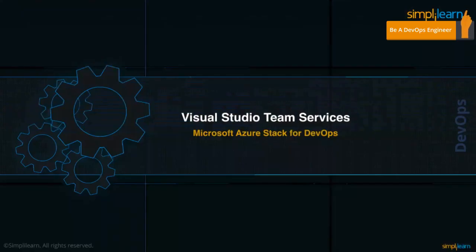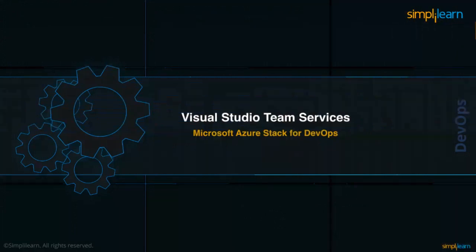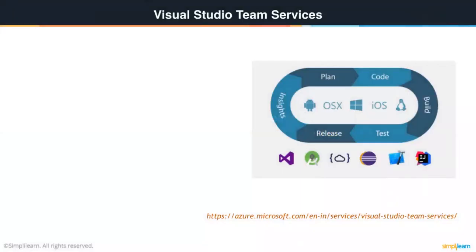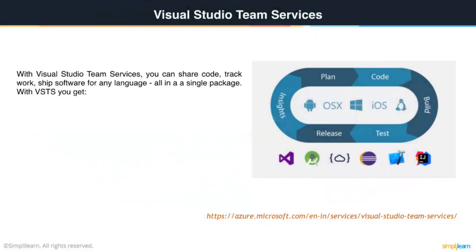Microsoft has given their DevOps services a name known as Visual Studio Team Services, where all the DevOps-related services have been compiled. If you want to make a full-fledged DevOps pipeline — starting from plan to code to build to test and release — you are supposed to work with Visual Studio Team Services.